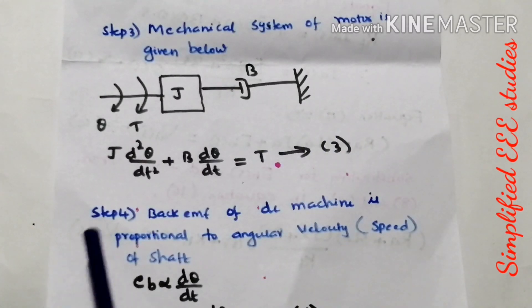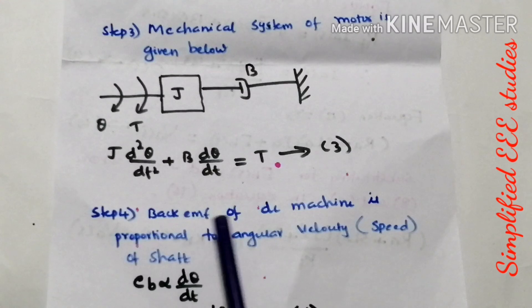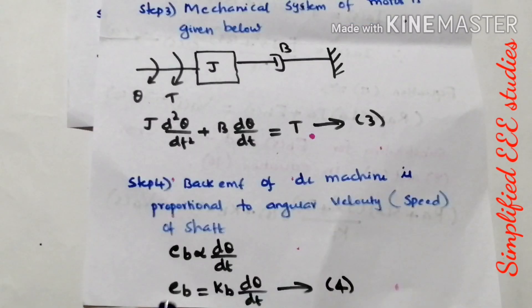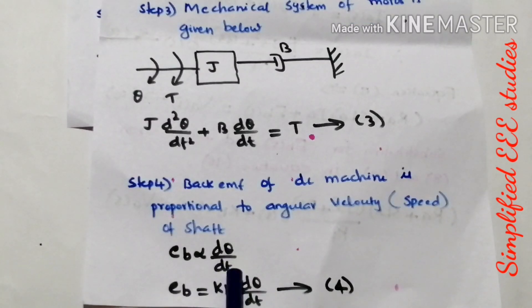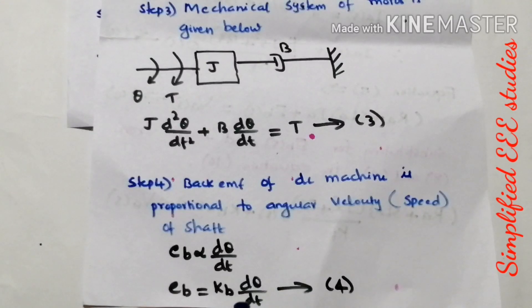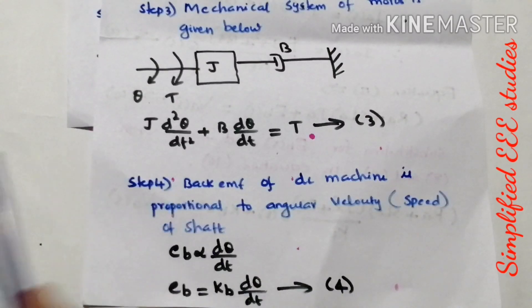Now moving to step number 4. Back EMF of the DC motor is proportional to the angular velocity of the shaft. That is a true fact. So Eb is directly proportional to dθ/dt, or to avoid the proportionality constant: Eb = Kb·(dθ/dt), where Kb is the back EMF constant. Please call this equation number 4.